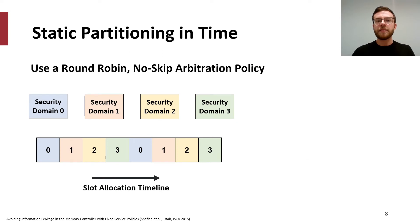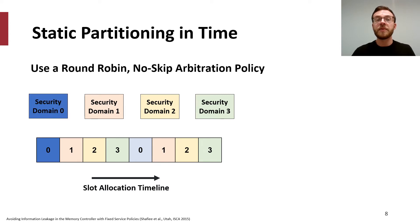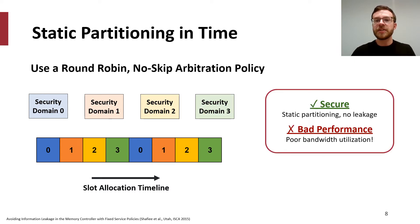Let's examine how memory controller side channels have been addressed in the past. The first approach is to statically partition memory controller usage through a round-robin, no-skip arbitration policy, such as in fixed service. Fixed service statically partitions and pipelines the memory controller such that memory requests from different security domains do not collide, ensuring no leakage occurs across domain boundaries. This static partitioning is secure but brings significant performance penalties: if one security domain requires more bandwidth than another, such a scheme can have severe negative impacts on system-wide performance.